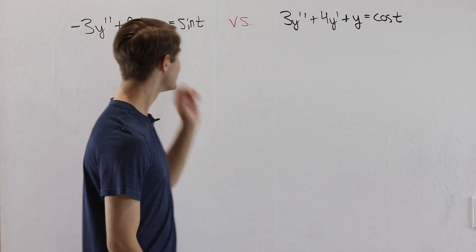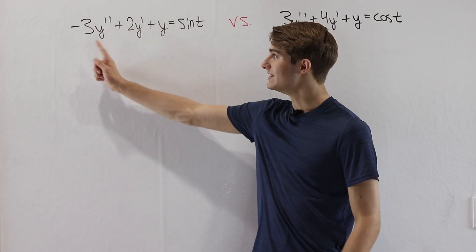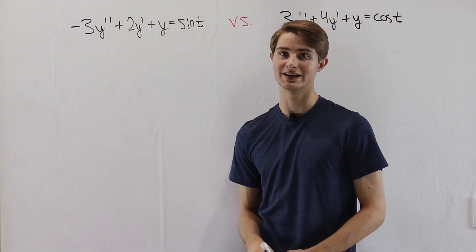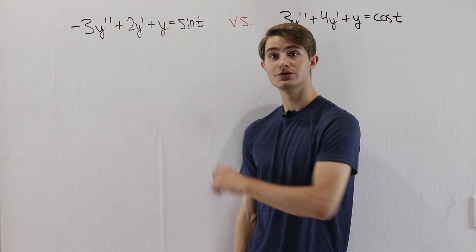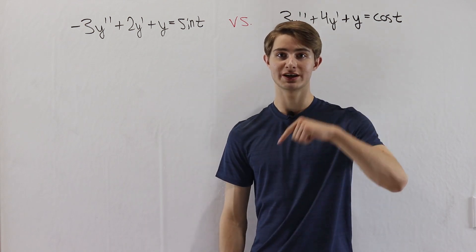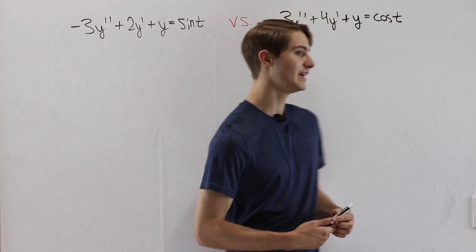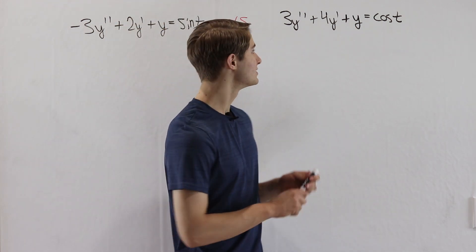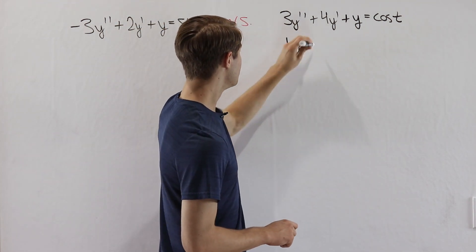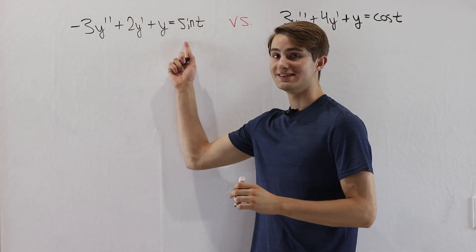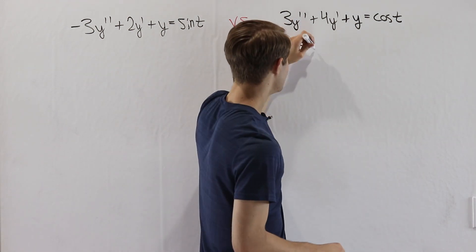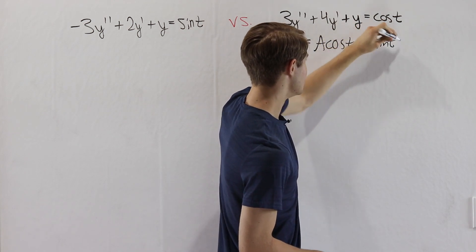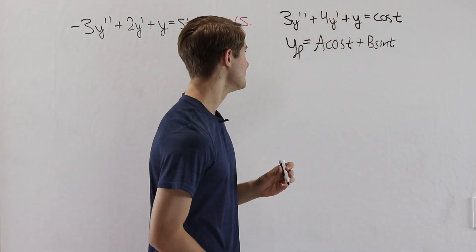We're going to start out by solving this first differential equation: negative 3y double prime plus 2y prime plus y equals sine t. We're going to solve this using undetermined coefficients. We know the first thing we're going to do is guess a form of the particular solution. Because the right side of the equation is sine of t, our particular solution must be a cosine t plus b sine t for some constants a and b.